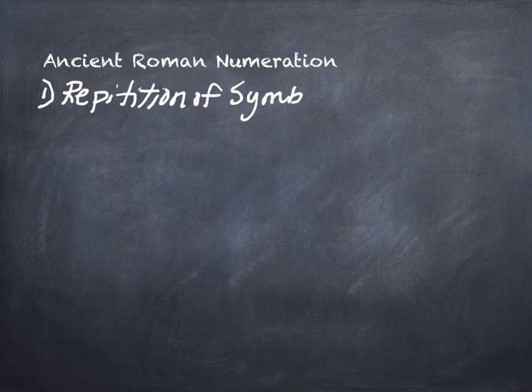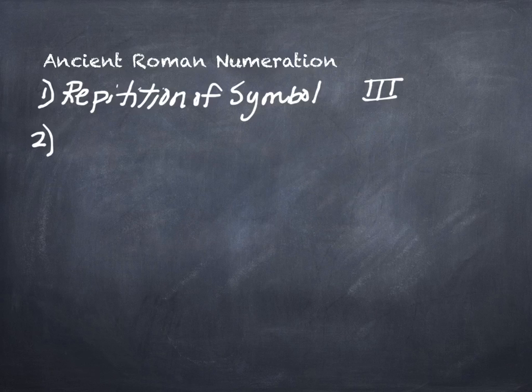In other words, if they want the number 3, they put 3 of the i's together, right? They repeat the symbol for 3. So they have some repetition of symbols, but they don't do all of their symbols that way. For instance, if I want the number 8, I don't do 8 1's or 8 slash marked i's next to each other.